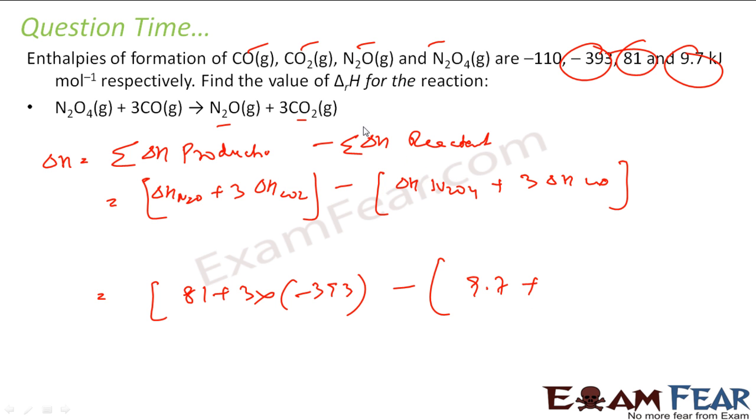Plus delta H for CO, so for CO it is minus 110. So 3 into minus 110. If you solve all this, it comes out to be minus 777.7.